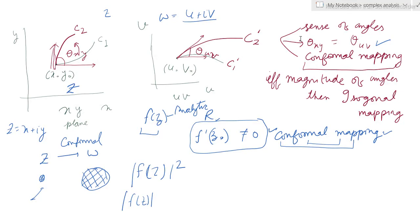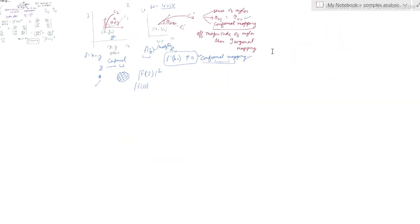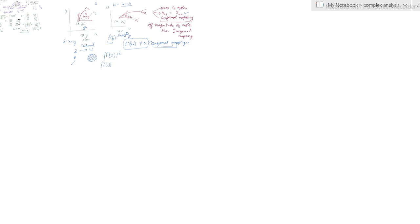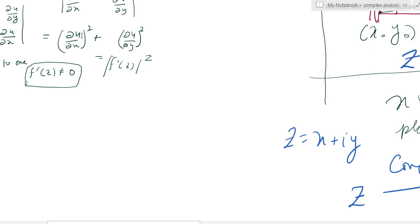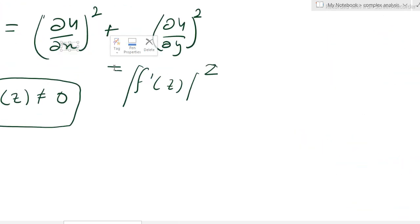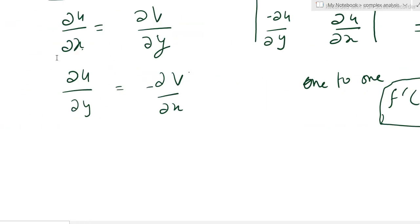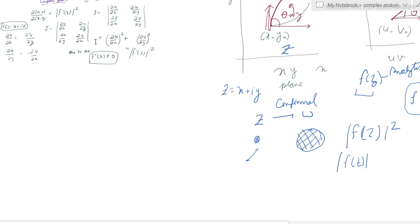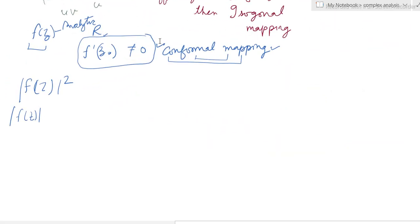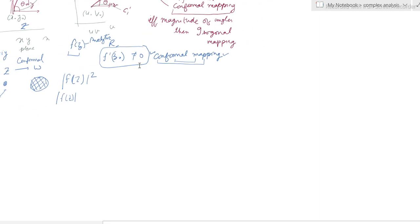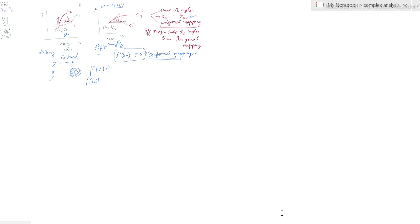This is what we had done in the previous lecture — the conformal mapping introduction. We had done two things: we derived the condition for a conformal mapping for a one-to-one mapping. This is what we had done in conformal mapping till now, and we will be doing more things going forward.